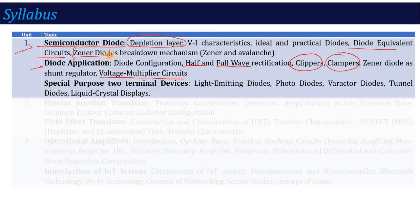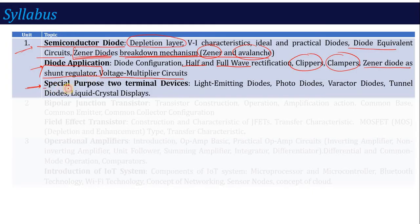Then we will come to diode concepts where we will see two breakdown mechanisms — one is called Zener and one is called avalanche. These are very important breakdown mechanics, and most of the time there is a question on them in the question paper. Then we will study what is the diode as a shunt regulator. After that, in the first unit, the second part covers special purpose two-terminal devices: light emitting diode, photo diode, varactor diode, tunnel diode, and LCDs — with a quick introduction on their working, structure, application, and advantages.